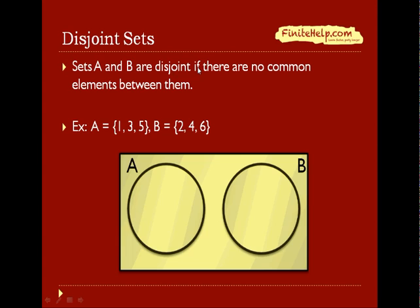Sets A and B are disjoint if there are no common elements between them. Here's an example. We have set A with the elements 1, 3, and 5, and set B with elements 2, 4, and 6. Notice there is nothing in common between A and B, so A and B are said to be disjoint. On the Venn diagram, you can represent it like this. Here's A and B, and there is no common overlapping area in the middle for them.